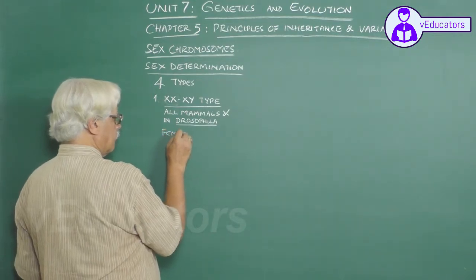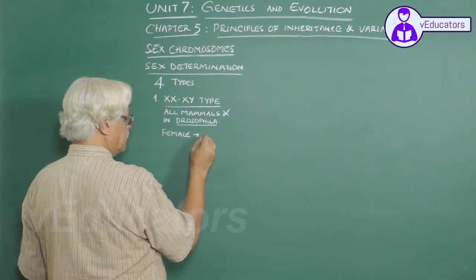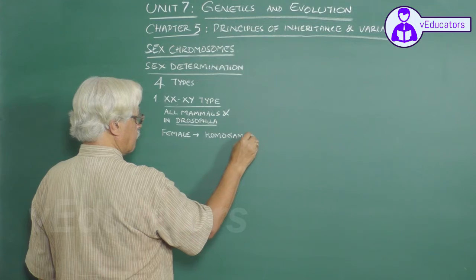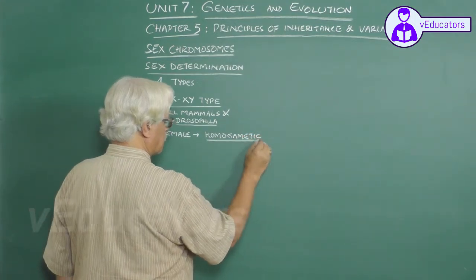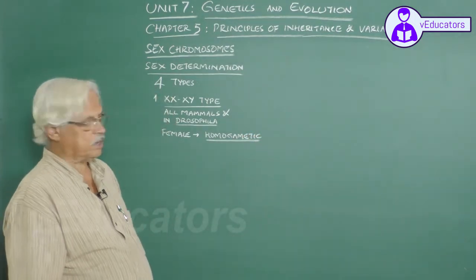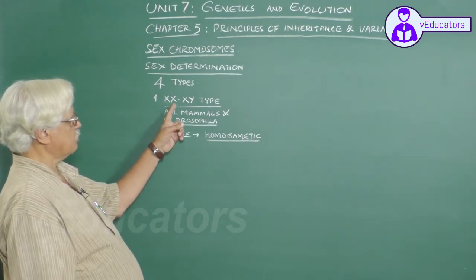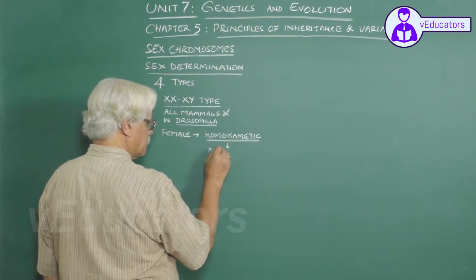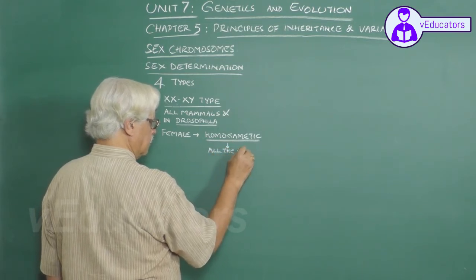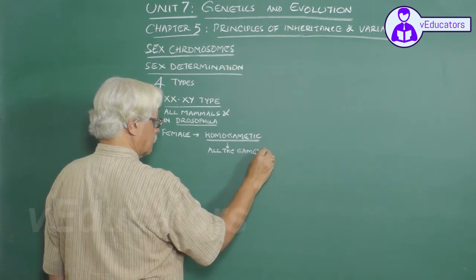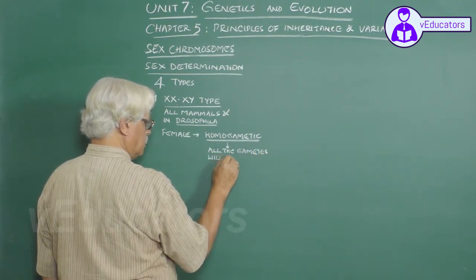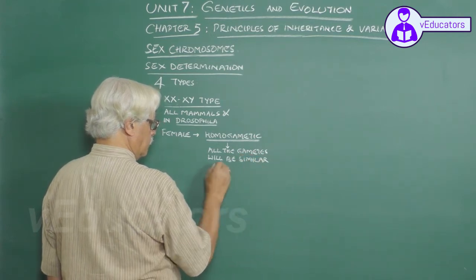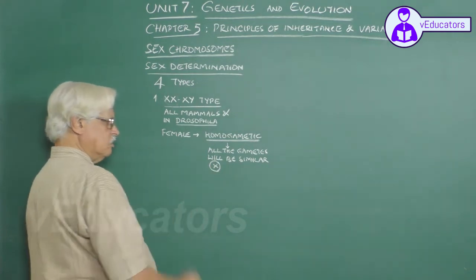The female is described as homogametic, because both the sex chromosomes are of the same type, so all the gametes will be similar and carry one X chromosome.